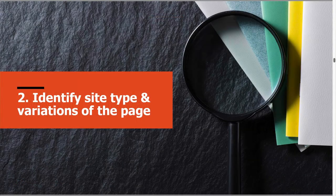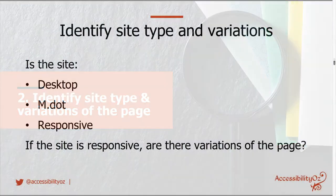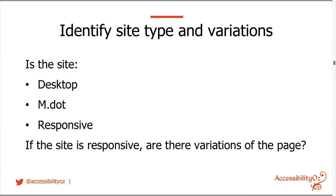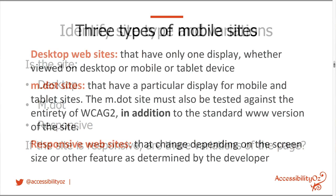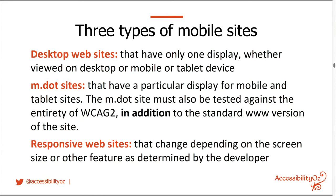When it comes to the mobile site or application, it's really important to identify your site type and variations of the page. You need to decide whether the site is a desktop site, an MDOT site, or a responsive site. Desktop websites have one display whether viewed on desktop or mobile. MDOT sites have a particular display for mobile and a different display for PCs or Macs — which actually means there are two websites, so you need to test both as separate websites. Responsive websites, which is basically most of the web, change as different elements show up depending on screen size.